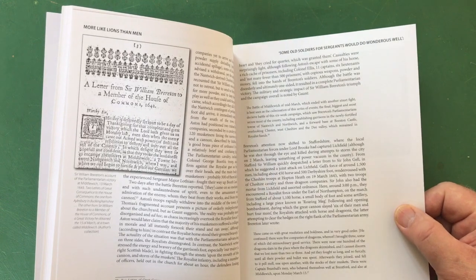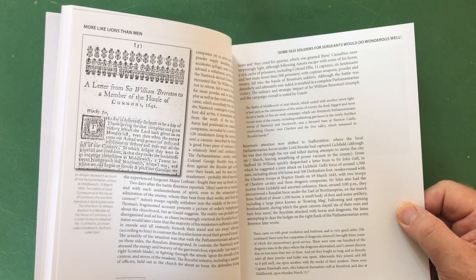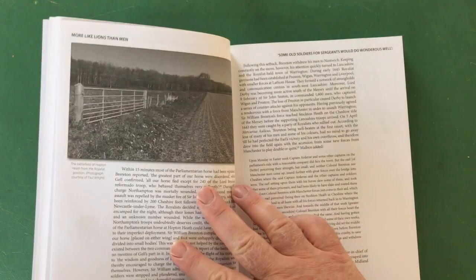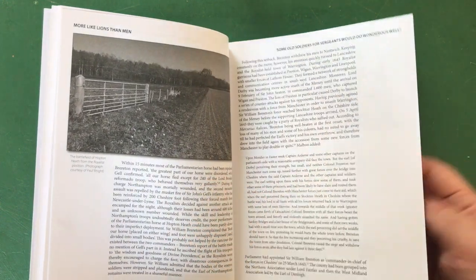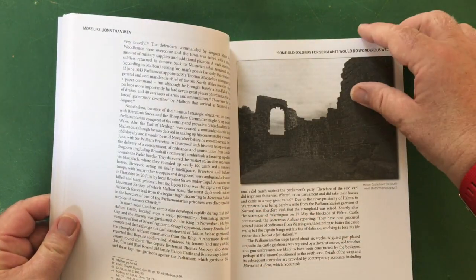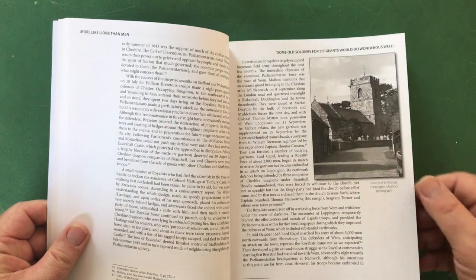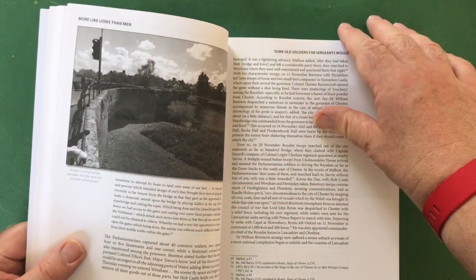A letter from Sir William Brereton to a member of the House of Commons in 1642, Sir William Brereton's account of the parliamentarian victory at Middlewich on the 13th of March 1643, photograph of the battlefield of Hopton Heath from the royalist position.